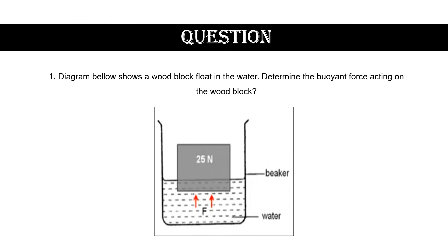Before we end this class, I have a question for you. The first question: the diagram below shows a wooden block floating in water. Determine the buoyant force acting on the wooden block. Since the object is floating in the water, it is in the equilibrium state, so the weight of the object is equal to the buoyant force. The answer is 25 newtons — since the weight is 25 newtons, the buoyant force is also 25 newtons.